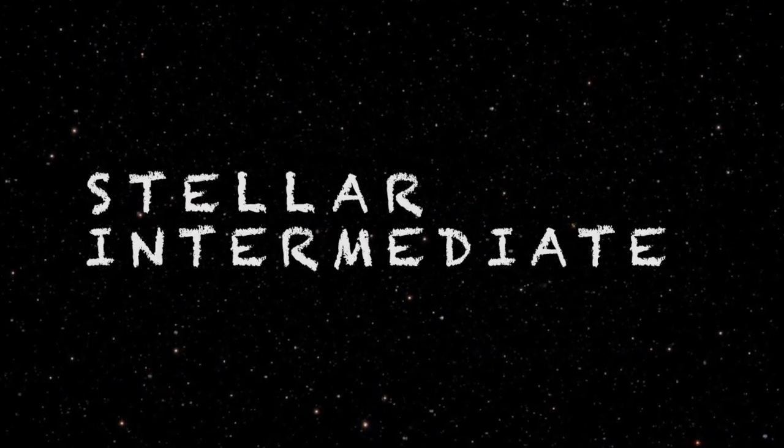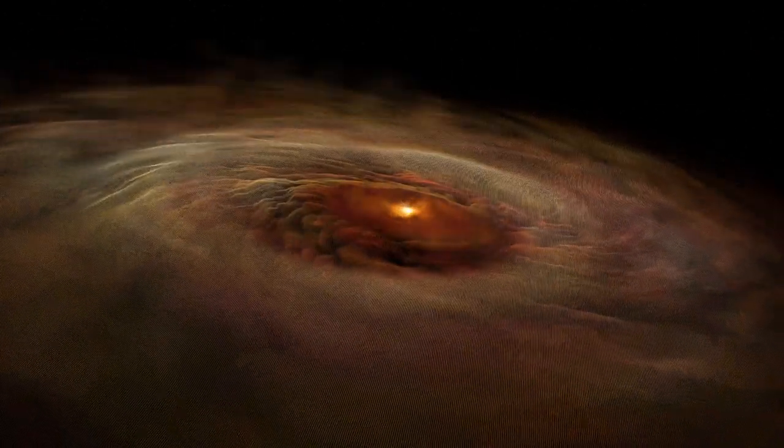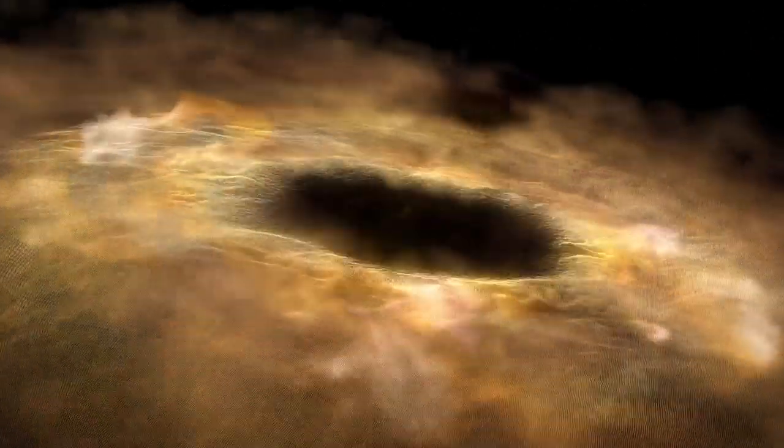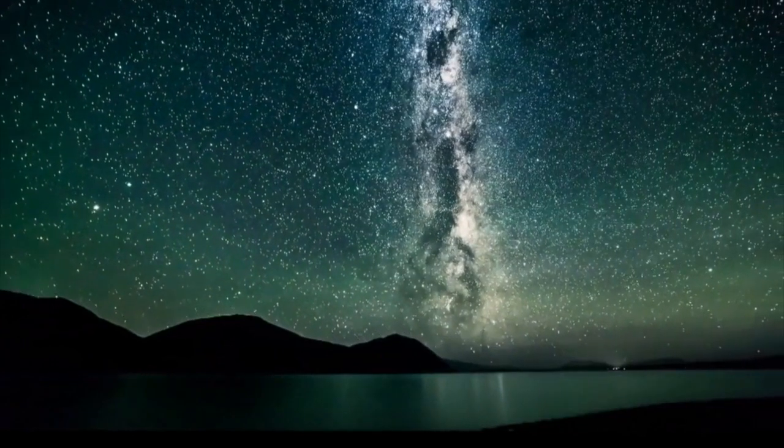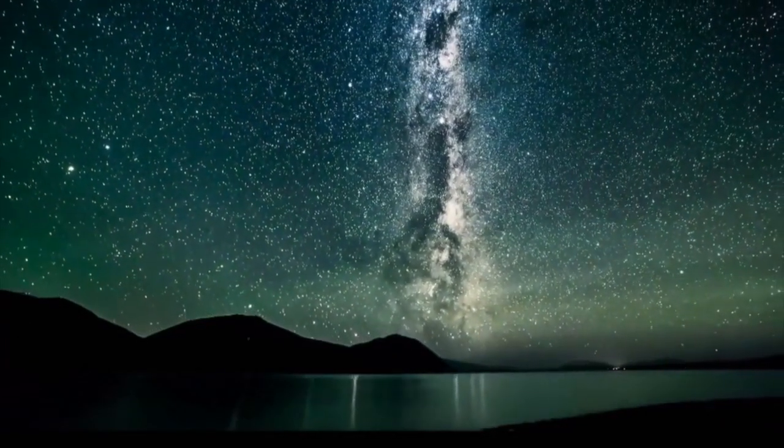Besides these, there are two other types: stellar and intermediate. Stellar black holes are formed by the gravitational collapse of a star and are much smaller, about 5 to 10 solar masses. The Milky Way likely contains a few hundred million stellar black holes.